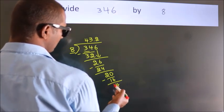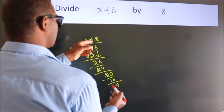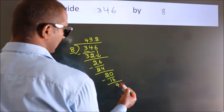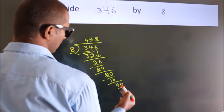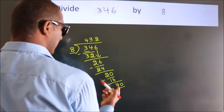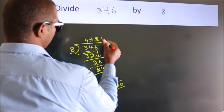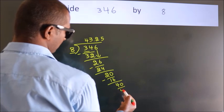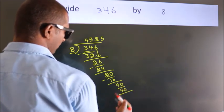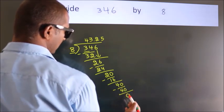After this, we already have the decimal. So directly take 0. So 40. When do we get 40? In 8 table, 8 fives 40. Now we subtract. We get 0.